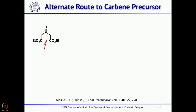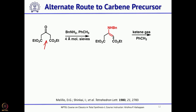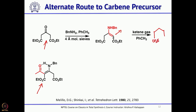Treatment of the beta-ketoester with benzylamine in the presence of molecular sieves forms an enamine. That enamine, when treated with ketene, undergoes reaction at the alpha position to introduce an SCOCH3 group via O-to-N acyl migration. The structure can be viewed after rotating 180 degrees — you get the compound with N-Bn and COCH3 groups.